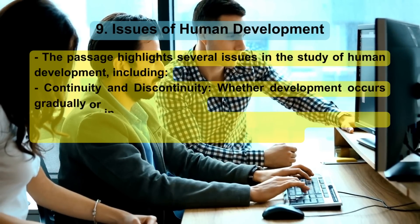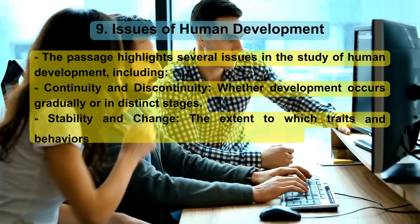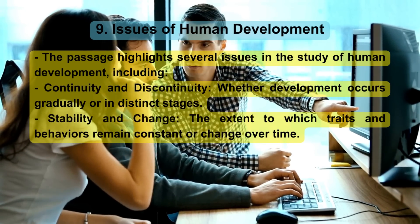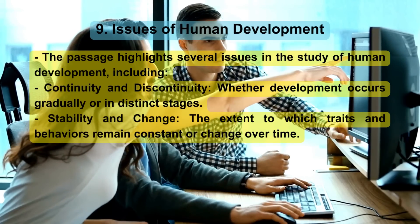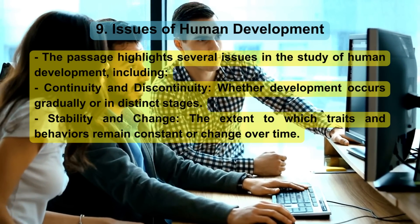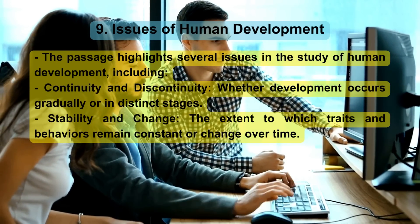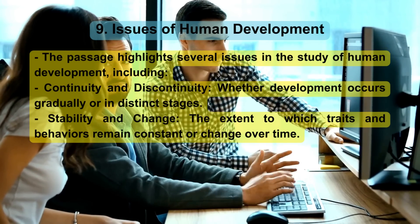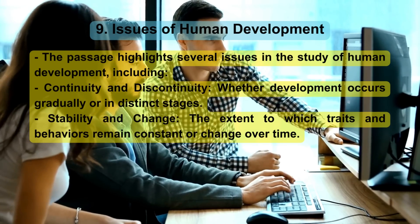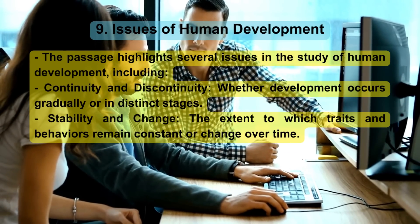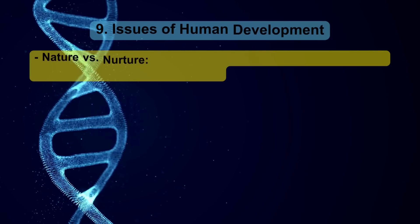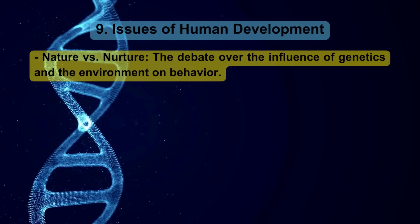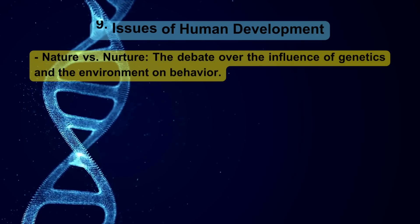Issues of human development: The passage highlights several issues in the study of human development, including continuity and discontinuity — whether development occurs gradually or in distinct stages; stability and change — the extent to which traits and behaviors remain constant or change over time; and nature versus nurture — the debate over the influence of genetics and the environment on behavior.